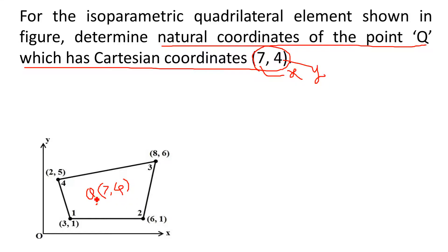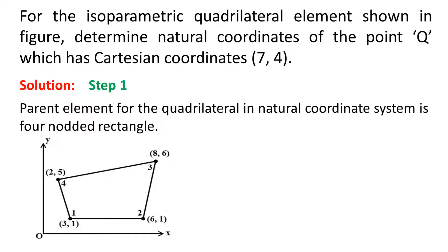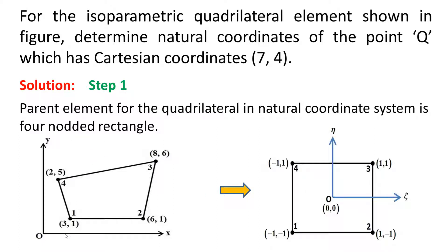The given element is a quadrilateral, which is called the mapped element. In the solution, the very first step is to draw the parent element for the given quadrilateral isoparametric element. The parent element of the quadrilateral is a 4-noded rectangular element in the natural coordinate system.